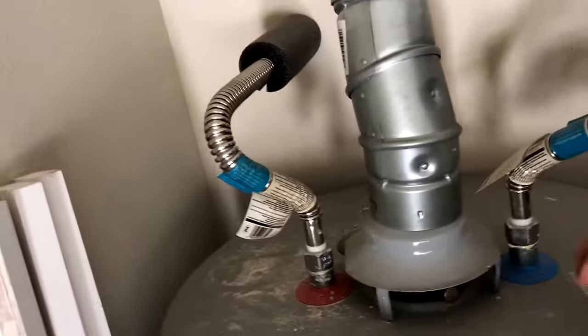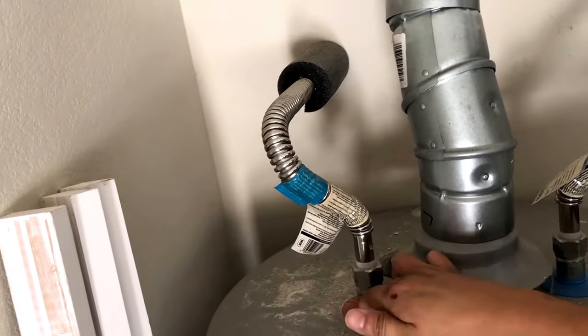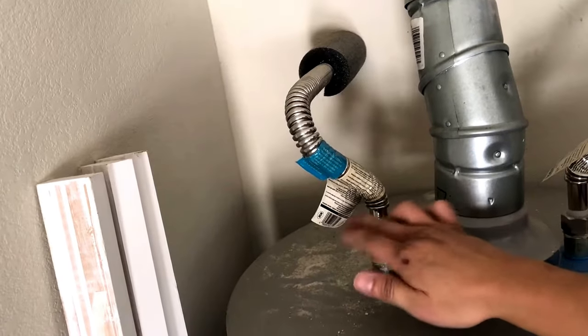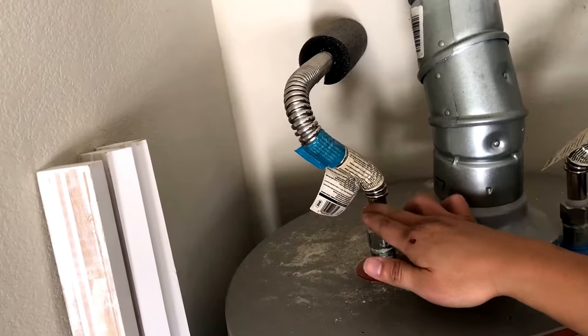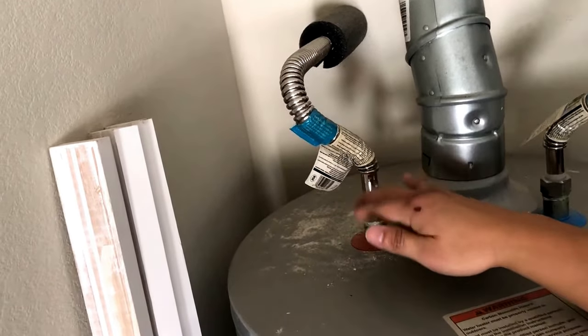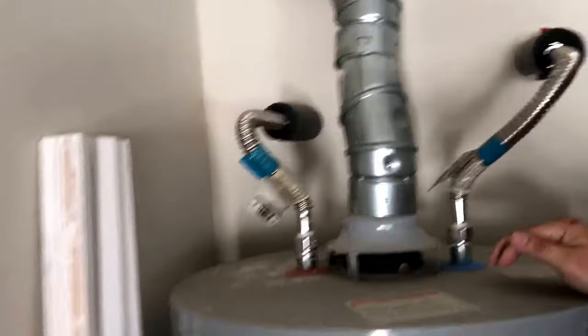On the other side we have red, that's the output of this water heater. After the water has been heated, it goes out this way to the house, to your faucet in your kitchen, bedroom, etc.